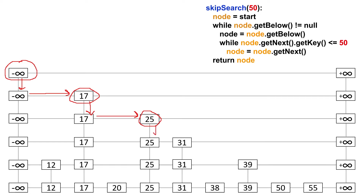Now that we can't go forward, we try to drop down, and we can because this below reference is not null — it holds the key 25. Down the next level, we go forward: is 31 less than or equal to 50? It is, so we go forward. We can't go forward again because positive infinity is greater than 50, so we drop down another level. Down the next level, we go forward: 39 is less than or equal to 50, so we go there. We try to drop down another level — we can — and then we go forward: 50 is less than or equal to 50, so we go here.